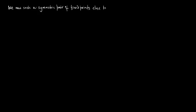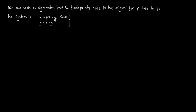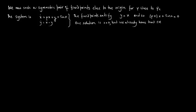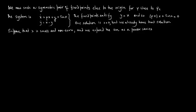We now seek a symmetric pair of fixed points close to the origin for mu close to mu-critical. The system is x-dot equals mu*x plus y plus sin(x) and y-dot equals x minus y. The fixed points satisfy y equals x, so (mu+1)*x plus sin(x) equals 0. One solution is x equals 0, but suppose x is small and non-zero and we expand the sine term as a power series, then (mu+1)*x plus x minus x-cubed over 3! plus order x-to-the-5 terms equals 0.